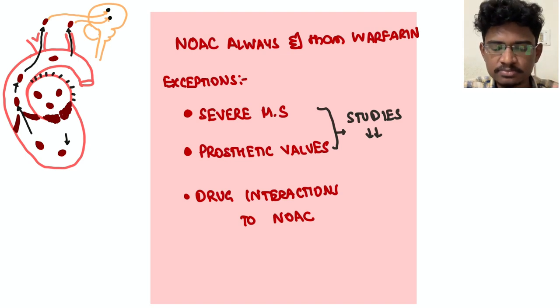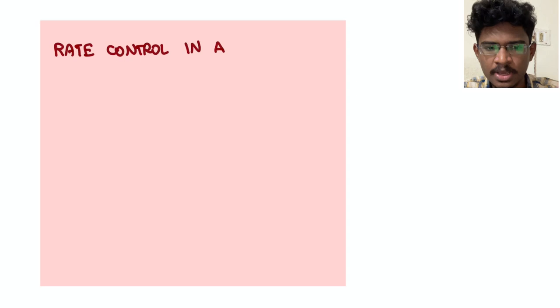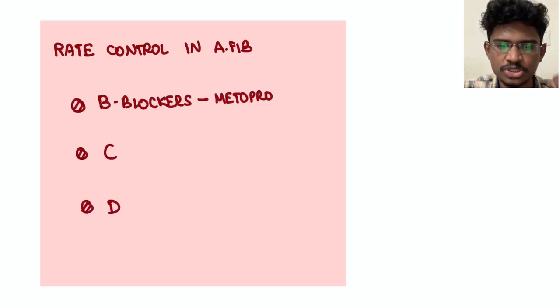NOACs are nothing but dabigatran, rivaroxaban, and apixaban. All these things. Coming to the rate control in AF, as we know the mnemonic BCD: beta blocker, calcium channel blockers like verapamil or diltiazem, D for digoxin.